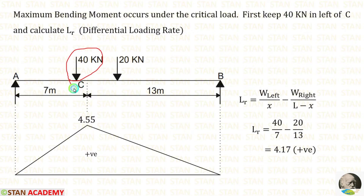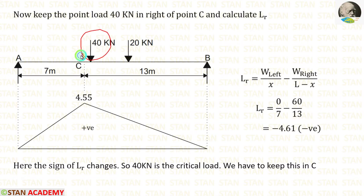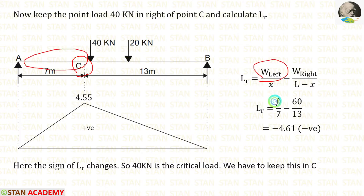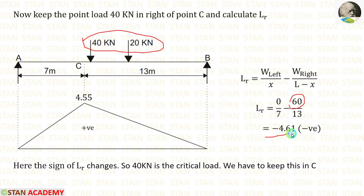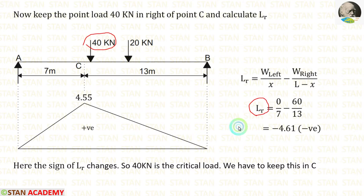Now let us keep 40 kN on the right of C and find LR. On the left of C there is no load, so W_left = 0. On the right of C we have both loads, giving W_right = 40 + 20 = 60. Finally, we get a negative value. That means our assumption is correct — 40 kN is the critical load because the sign of LR changes from positive to negative. So we have to keep 40 kN at point C.